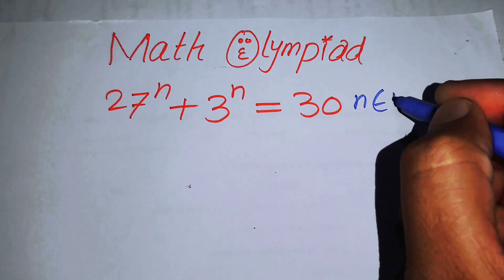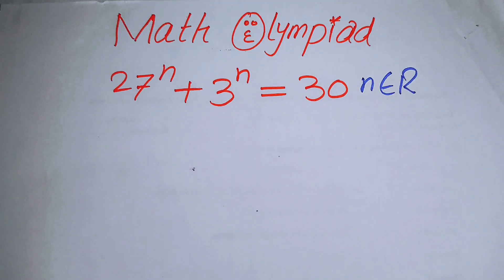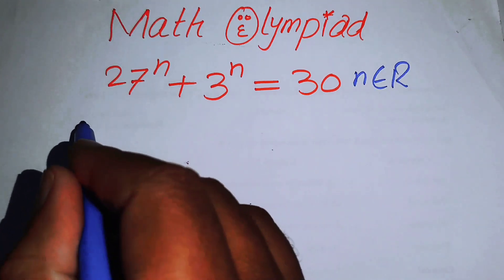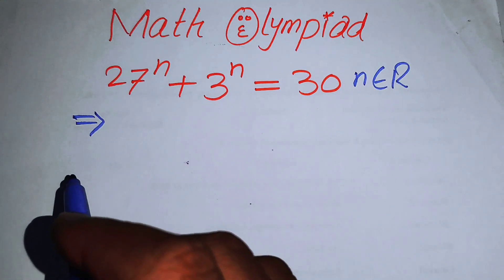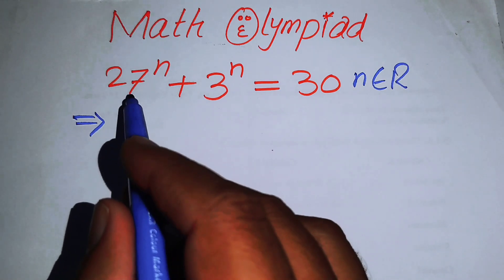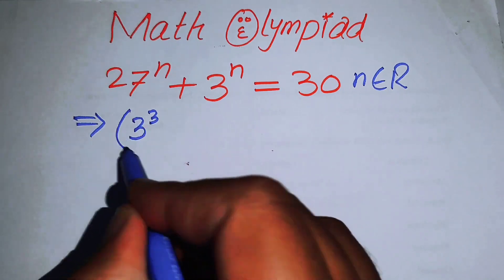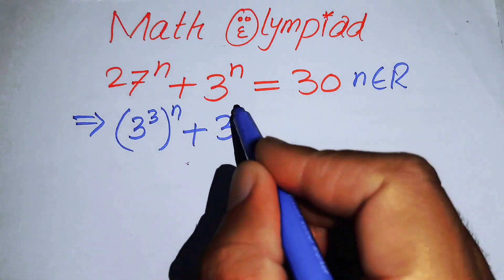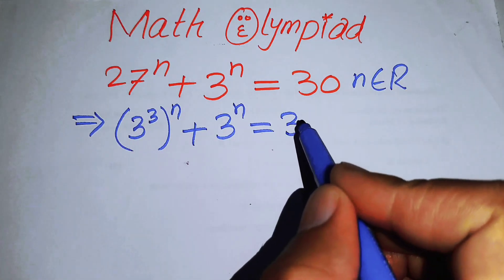The very first thing we are going to do is rewrite the left hand side. We have 27, and we can make the prime factors of 27 — you know that it will be 3 to the power of 3 — and its whole power n, plus 3 to the power of n, is equal to 30.